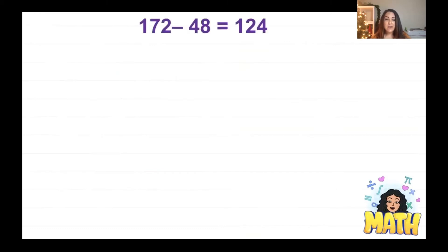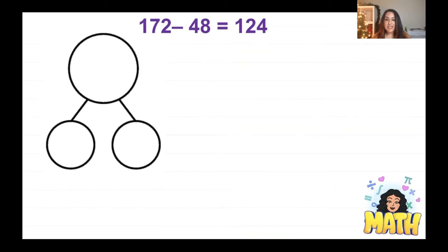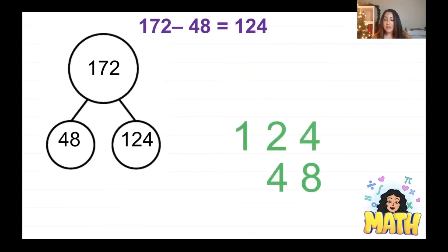Now that we did that problem, 172 take away 48 equals 124. If I look at that in a number bond: 172 is the whole, 48 is a part, and 124 is a part. Remember when we use related facts — if I need to find a part, I start with the whole and take away the other part, like we did on the last problem.